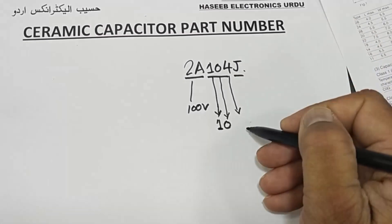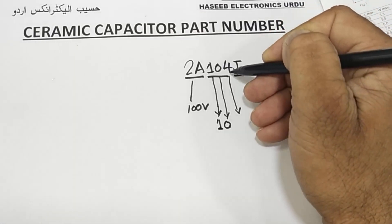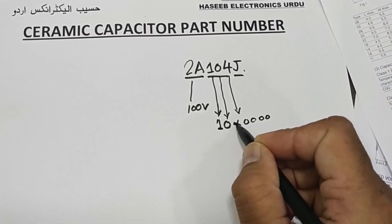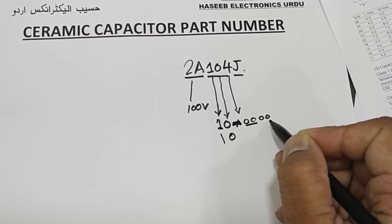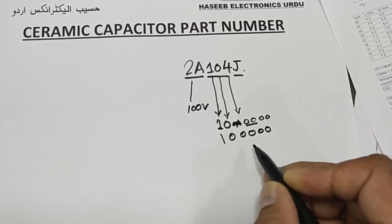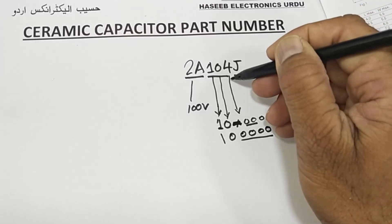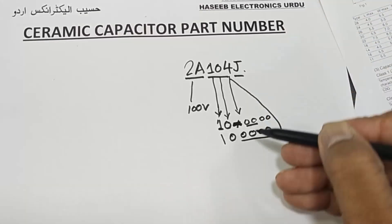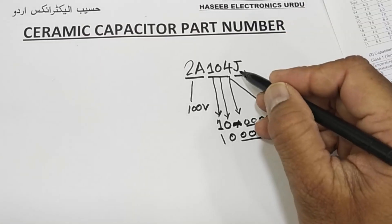Now for the capacitance code — for example if it is 101, you write 10 and add one zero, giving 100. If it is 102, you add two zeros, giving 1000. In our case we have 104: take 10, then add four zeros — 100,000 picofarad. These four zeros are the multiplier. If the third digit is 3, place three zeros; if it is 5, place five zeros.